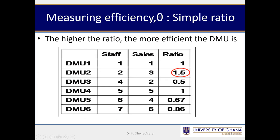Two over four gives you 0.5, five over five gives you one, and so on. Using the ratios, you can detect that the higher the ratio, the more efficient that particular firm is. So which firm is the most efficient? DMU2.